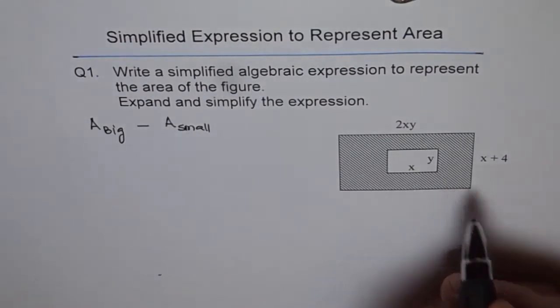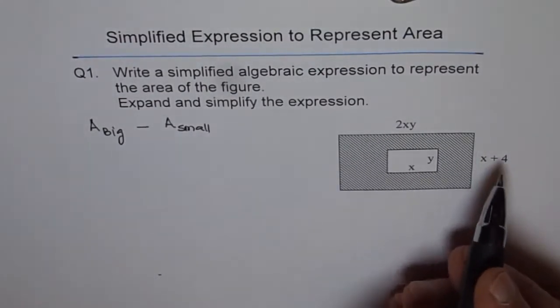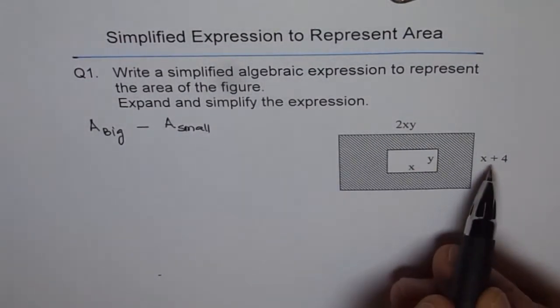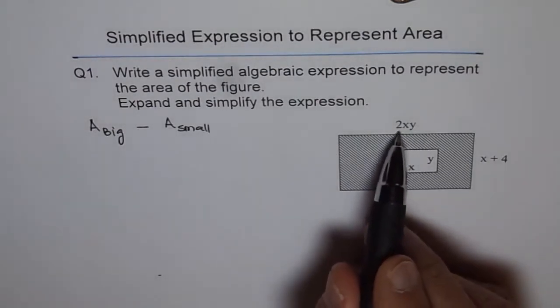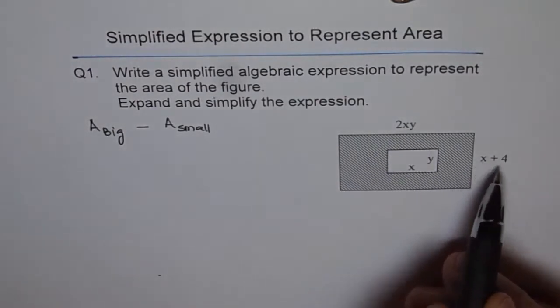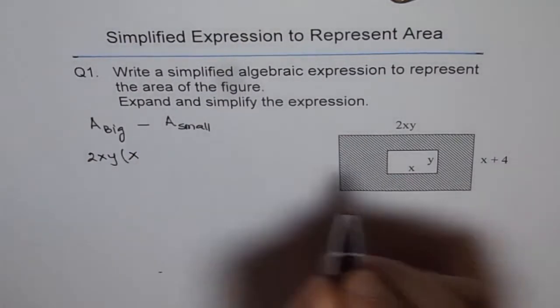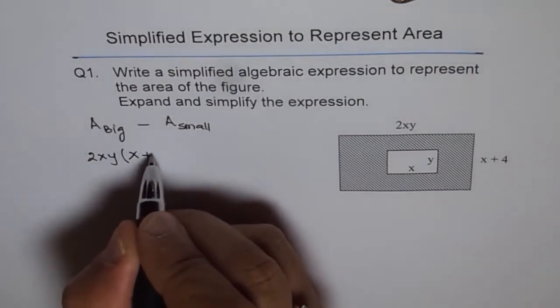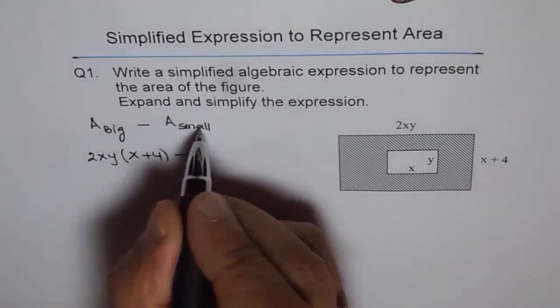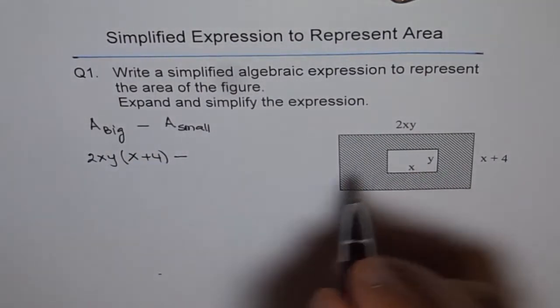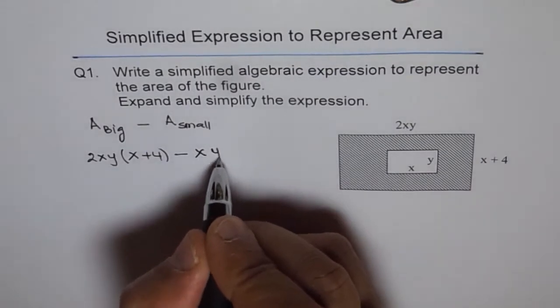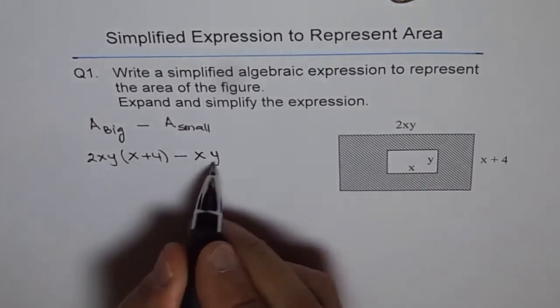What is the area of the big rectangle? Area of a rectangle is length times width, so we can write that as 2xy times (x+4). The area of the small one is x times y, which is xy. Now you can expand and simplify this.